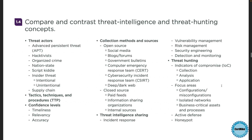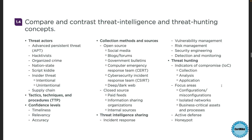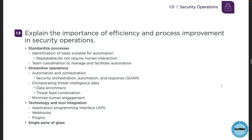Objective 1.4 on threat intelligence and threat hunting covers topics that were on the old exam, but it adds a lot of detail on specific topics that you need to know. And rounding out the changes to Domain 1, Objective 1.5 asks you to explain the importance of efficiency and process improvement in security operations. This one is entirely new.